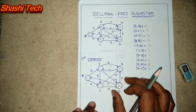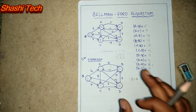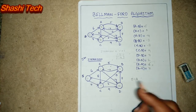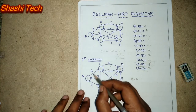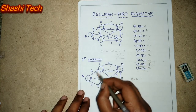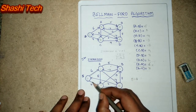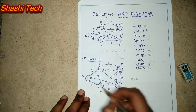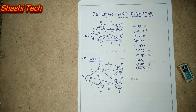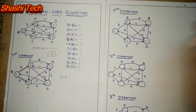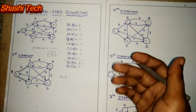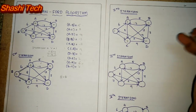We have completed the first iteration. Mark the paths you are getting. In the second iteration, the process repeats.